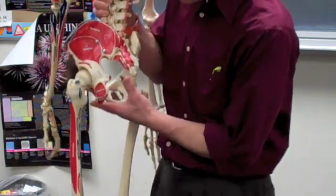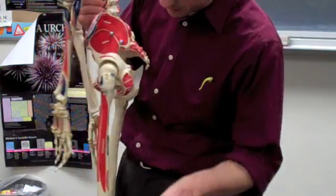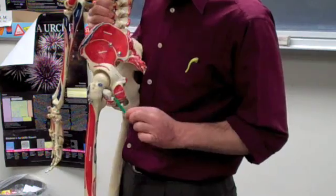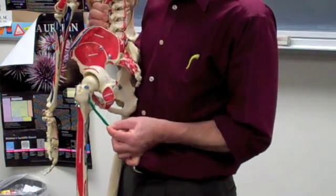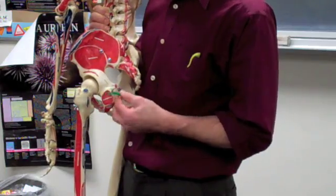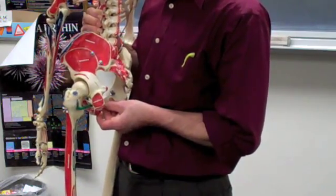And lastly but not least here, we have the quadratus femoris. And the quadratus femoris originates right here at the ischial tuberosity and it moves and goes right to this part of the greater trochanter. Again, same function when it contracts, able to externally rotate the thigh.